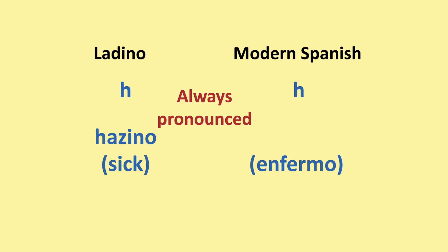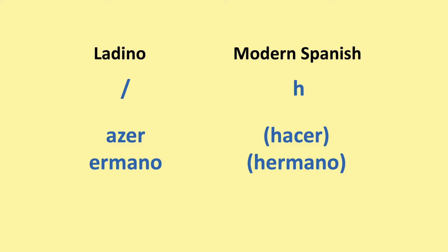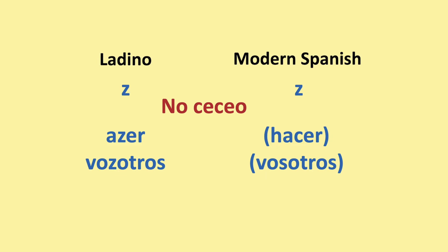In Spanish, the H isn't pronounced, so you would pronounce 'jazino' for sick — Spanish 'enfermo'. Many words that would have a silent H in Spanish would just not write anything in Ladino. So for example, Ladino would write 'azer' where Spanish has 'hacer', and Ladino 'ermano' where Spanish has 'hermano'.